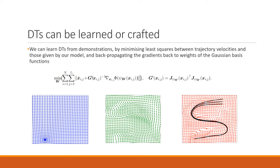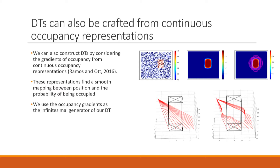We can also craft diffeomorphic templates from continuous occupancy representations, which find a smooth mapping between coordinates and the probability of those coordinates being occupied. We use the occupancy gradients as the infinitesimal generator. An example on the right shows a simple attractor with curves and an obstacle; by applying this diffeomorphic transform for obstacle avoidance, we can warp these trajectories smoothly around the obstacle.